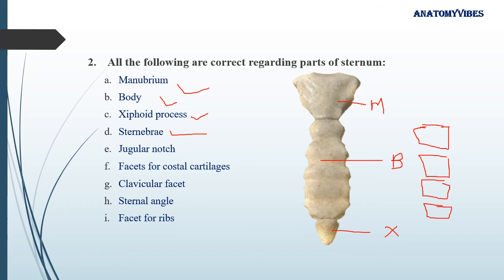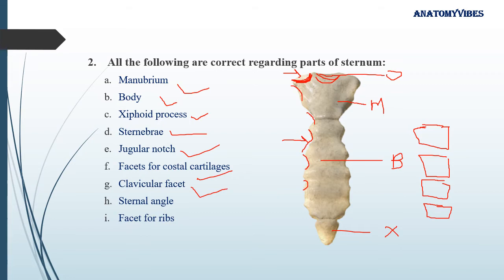Other parts include the jugular notch — the longitudinal depression at the uppermost part of the manubrium. Laterally there are facets for costal cartilages where costal cartilages articulate. The clavicular facet is at the uppermost part of the manubrium where the clavicle articulates. The sternal angle is where the manubrium articulates with the body, angulated anteriorly, and is present at the level of the T4–T5 intervertebral disc — a very important bony landmark.